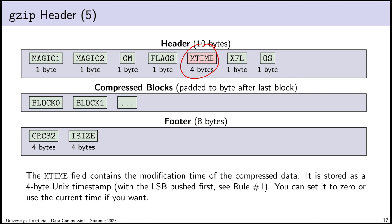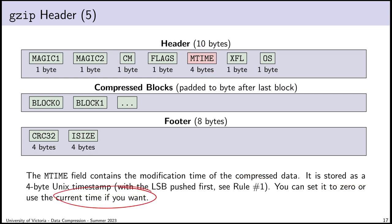Then there is mtime, which contains the modification time of the compressed data. It's a 4-byte Unix timestamp — that's a number, so Rule Number One applies. You could go get the current time from a library function and set mtime to that, or you can just set it to 0, which means the modification time was January 1st, 1970. Because all we care about is doing the compression, if you set this to any value you want it shouldn't break the decompression process.